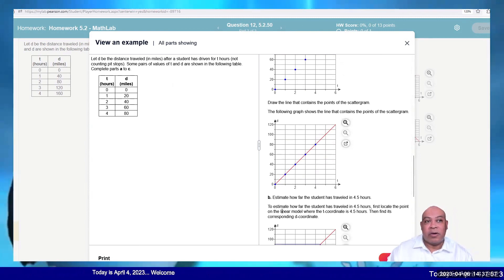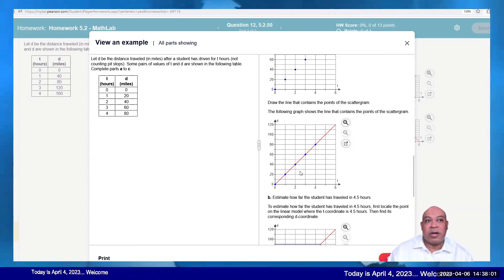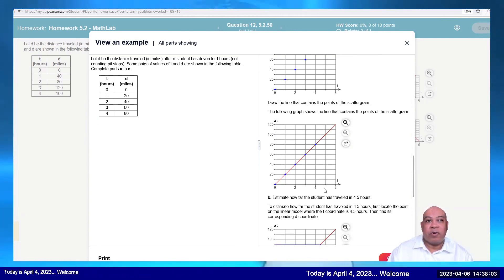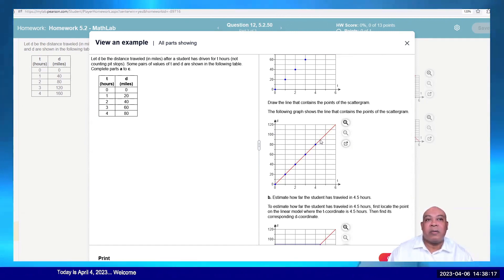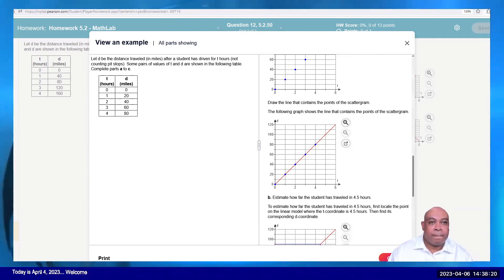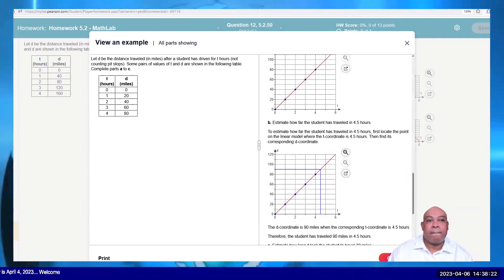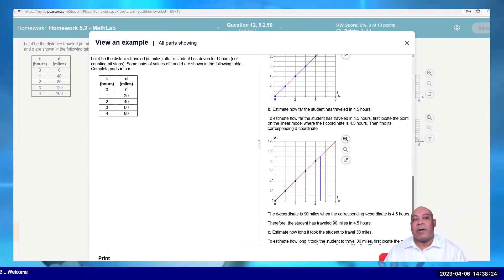Okay, so in four, how far is distance there? T is what, 4.4? 4.5 would be right in there. Here. It looks like it's 90 miles. 90 miles.